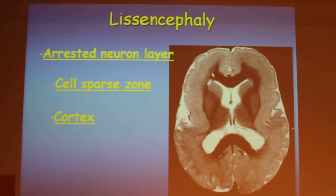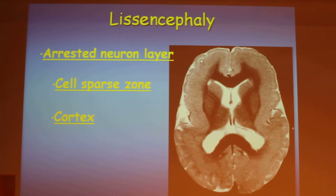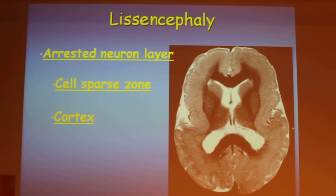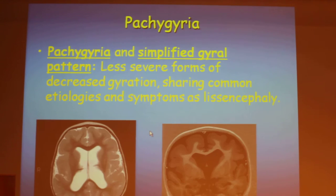If we look closely into the cortex, we see that there is an arrested neural layer which is very thick, and there is a very thin cell-sparse zone on T2 with high signal intensity, and then a thin cortex on top of it. This is the hallmark of lissencephaly, and we have to look at the whole image.